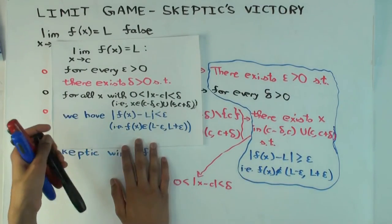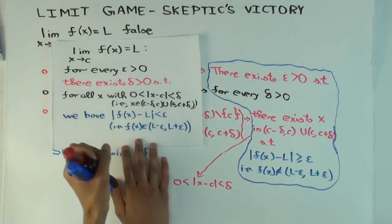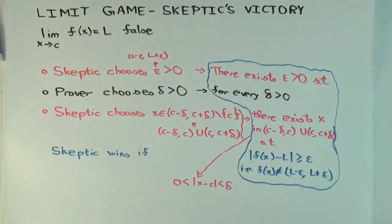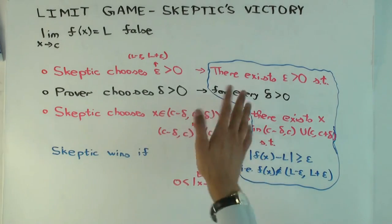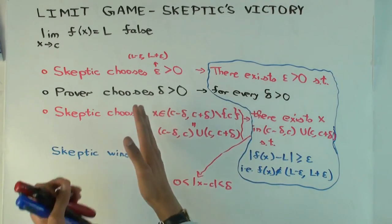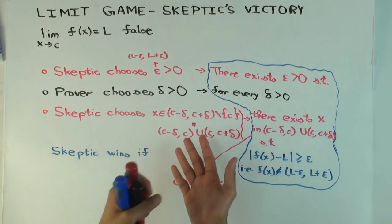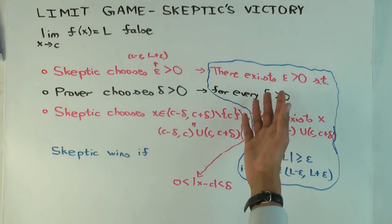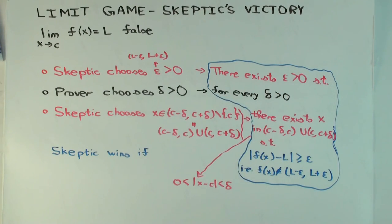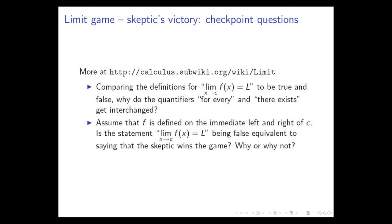And if you've seen some logic or if you'll ever see logic, then there are some general rules of logic as to how to convert a statement to its opposite statement. And this is the general rule that for all becomes there exists and there exists becomes for all.